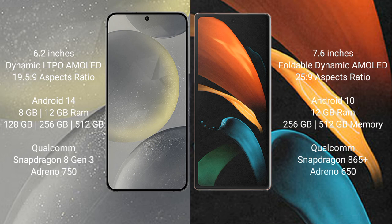Samsung Galaxy S24 comes with 8GB or 12GB RAM and 128GB, 256GB, or 512GB internal storage, Qualcomm Snapdragon 8 Gen 3 processor, and GPU Adreno 750. Samsung Galaxy Z Fold 2 comes with 12GB RAM and 256GB or 512GB internal storage, Qualcomm Snapdragon 865 Plus processor, and GPU Adreno 650.